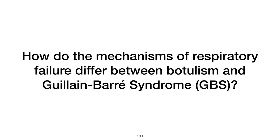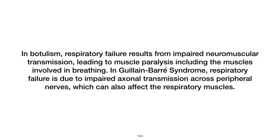How do the mechanisms of respiratory failure differ between botulism and Guillain-Barré syndrome (GBS)? In botulism, respiratory failure results from impaired neuromuscular transmission, leading to muscle paralysis including the muscles involved in breathing. In Guillain-Barré syndrome, respiratory failure is due to impaired axonal transmission across peripheral nerves, which can also affect the respiratory muscles.